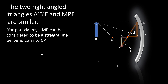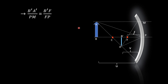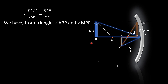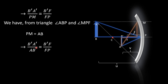Since the triangles are similar, the sides are proportional: B'A' divided by PM equals B'F divided by FP. Now, PM and AB are both the same height, so PM can replace AB. The equation reduces accordingly, using the blue color highlighted similar triangles.